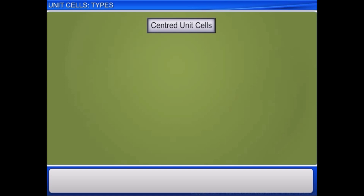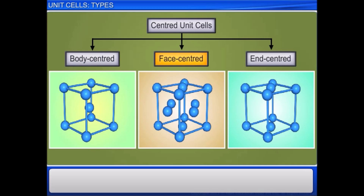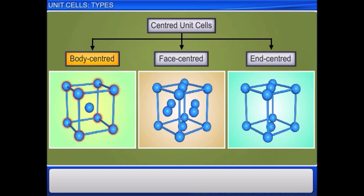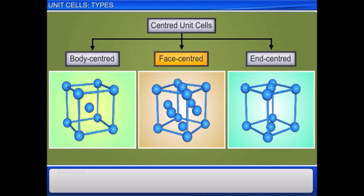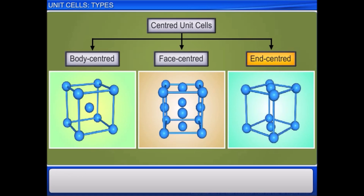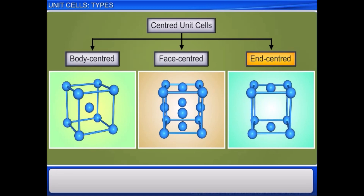Based on the position of the centered constituent particle, Centered Unit Cells are categorized into three types: Body Centered Unit Cell, Face Centered Unit Cell, and End Centered Unit Cell. A Body Centered Unit Cell has constituent particles at all its corners as well as one particle at its body center, as shown here. A Face Centered Unit Cell has constituent particles at all its corners as well as at the center of each face. An End Centered Unit Cell has one constituent particle at the center of any two opposite faces, besides the ones present at its corners.